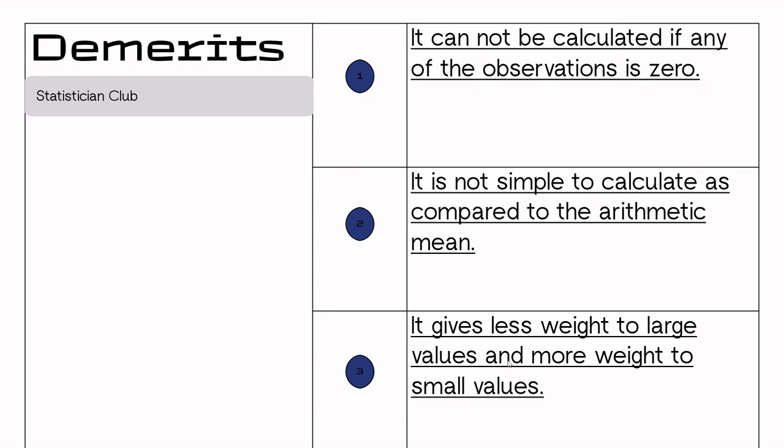Number 3: It gives less weight to large values and more weight to small values. Because the observations are in reciprocal form, it gives more weight to small values and less weight to large values.